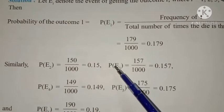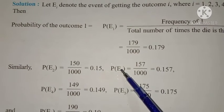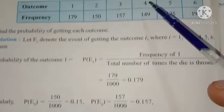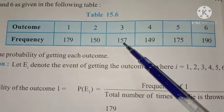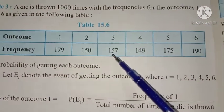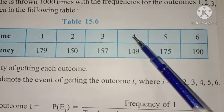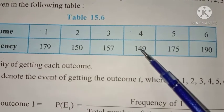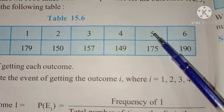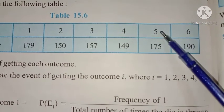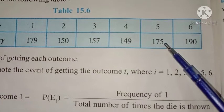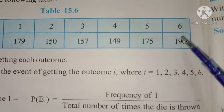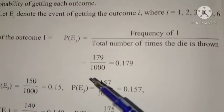P of E3 is the probability of getting outcome 3: 157 by 1000. P of E4, getting number 4: 149 by 1000. P of E5, getting number 5: 175 by 1000. P of E6, getting number 6: 190 by 1000.